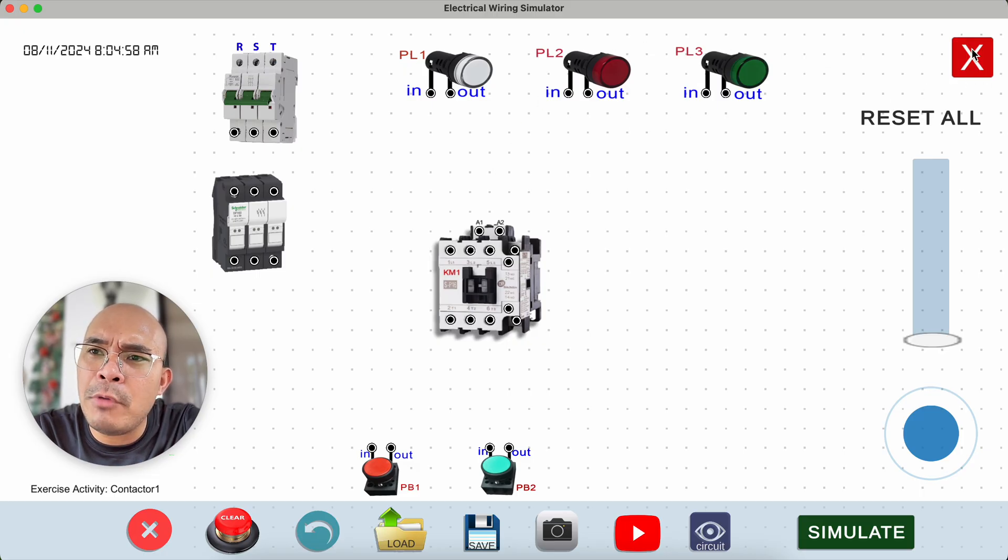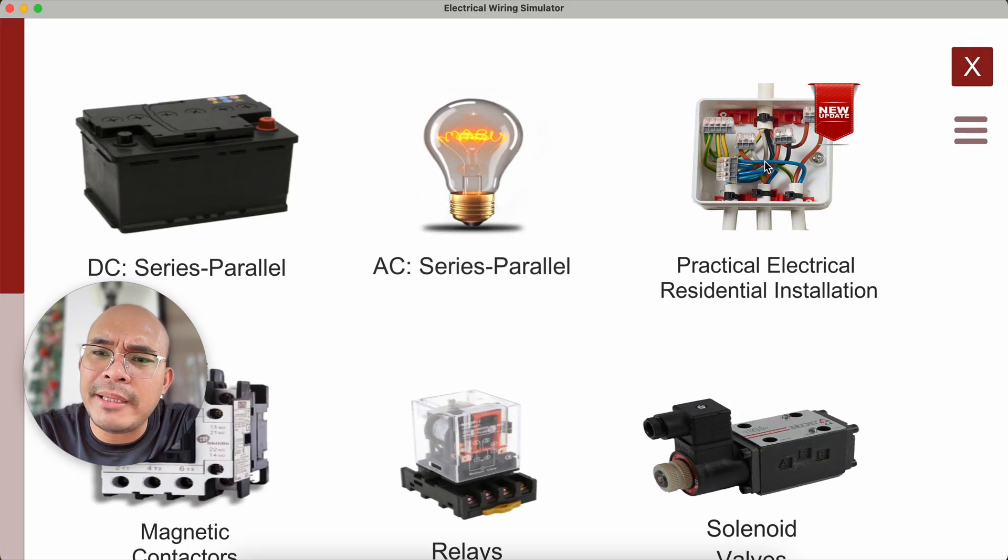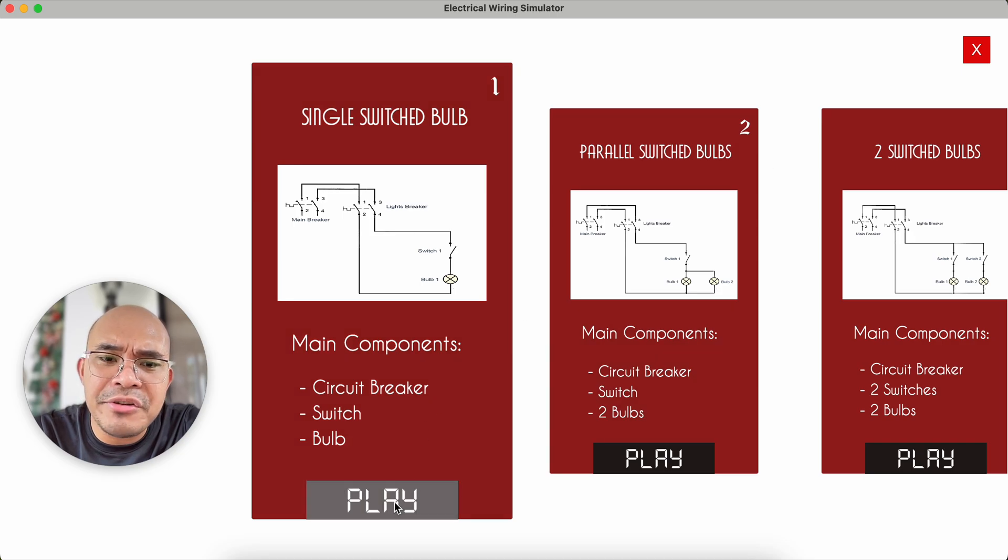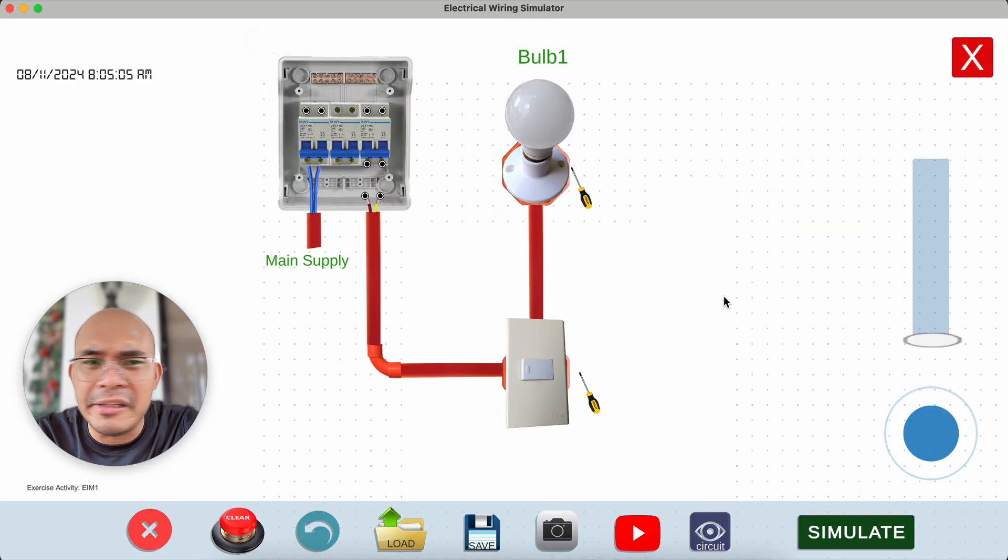The recent module that we have is this practical electrical residential installation. There is a junction box, a breaker, and then we can test this one. Now, let me show you the basic controls, the controls over here.